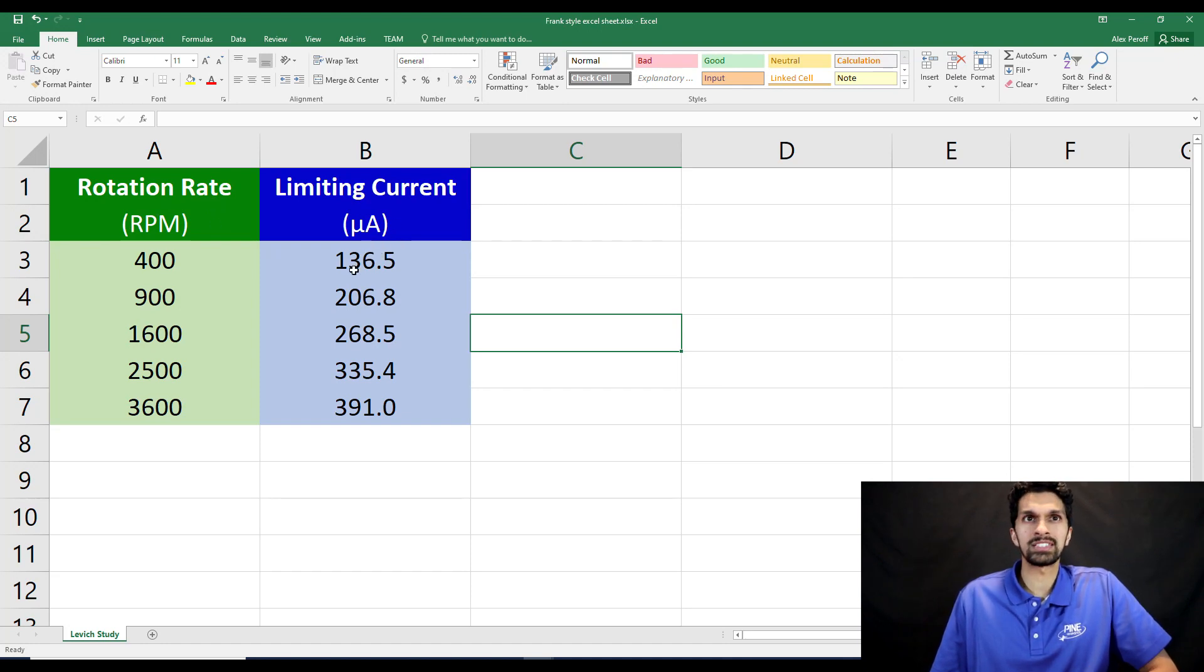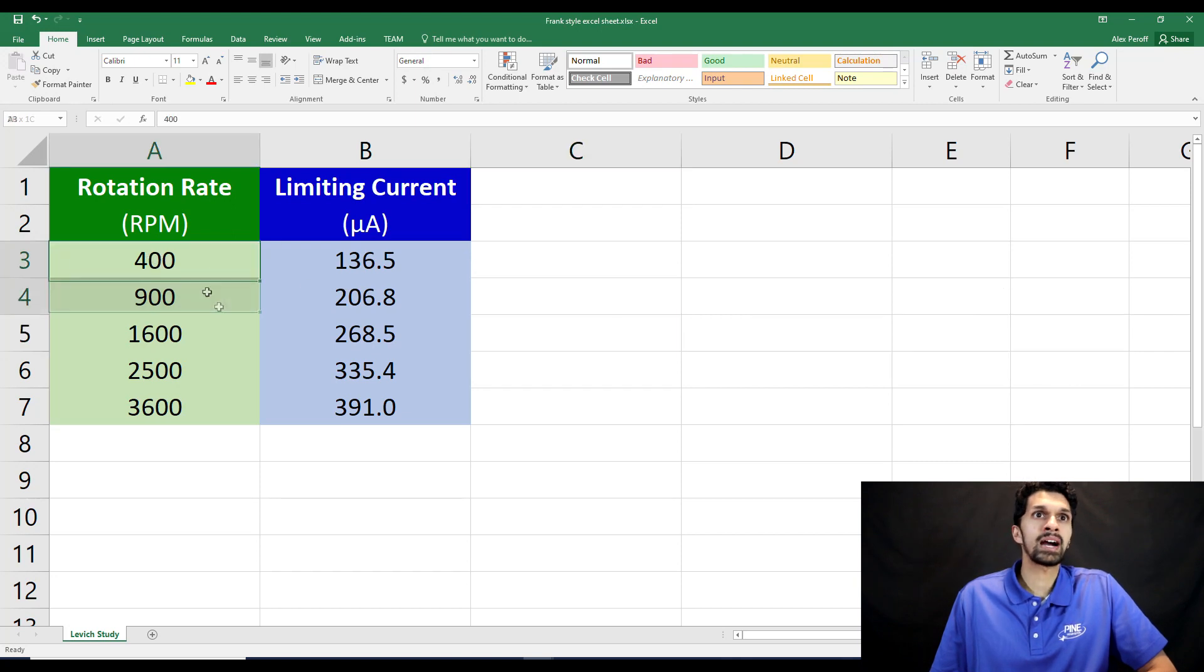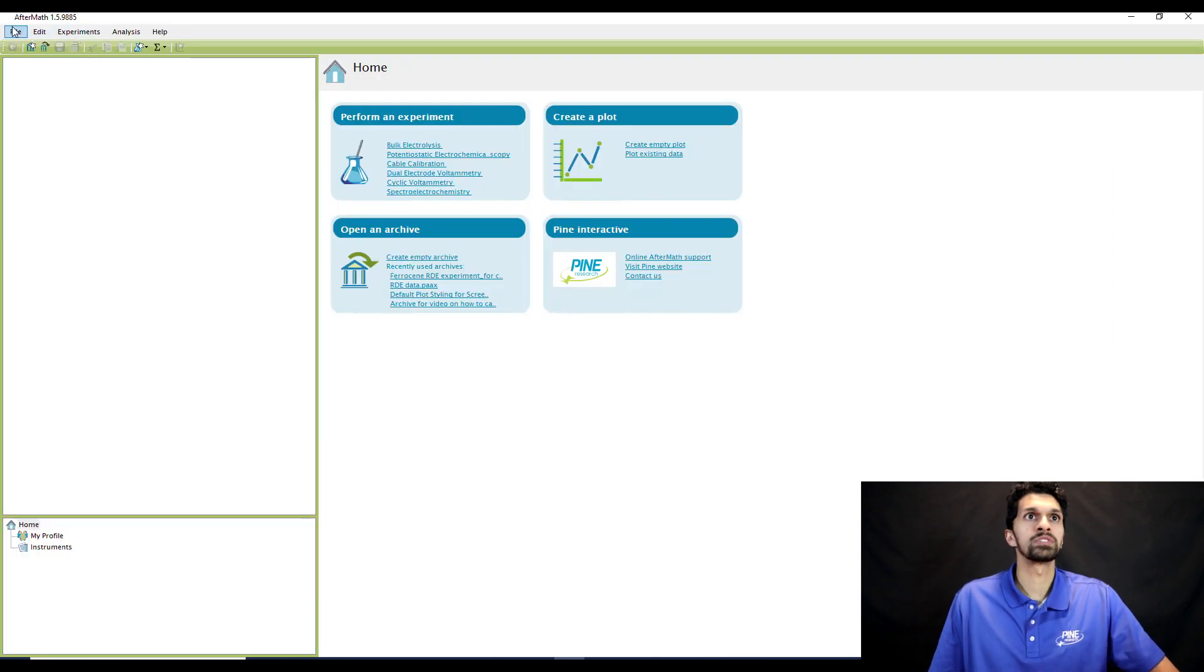Now, I could use Excel in order to do the data analysis, but I want to use Aftermath because it's going to make things a lot easier. So I can actually copy these points, just hit ctrl C. So I'm in Aftermath. I'm going to create a new archive.